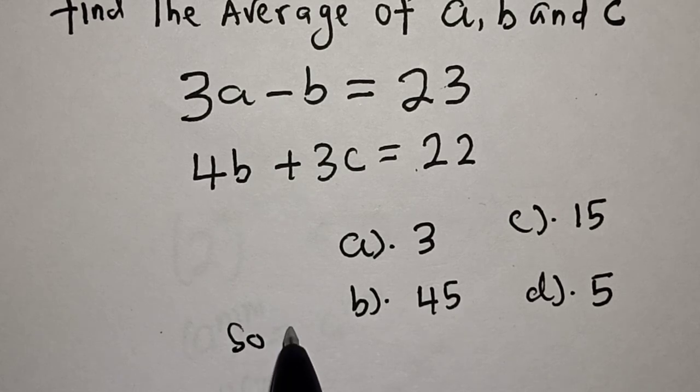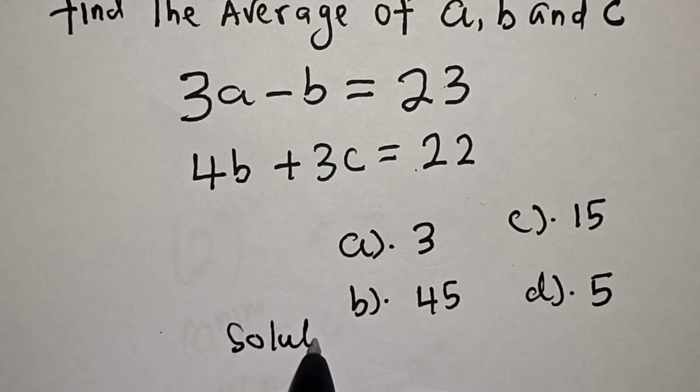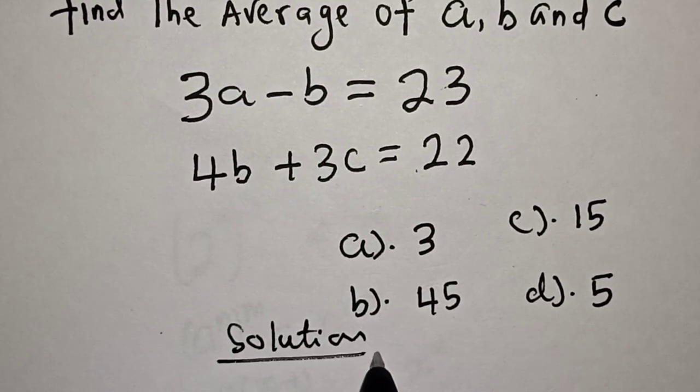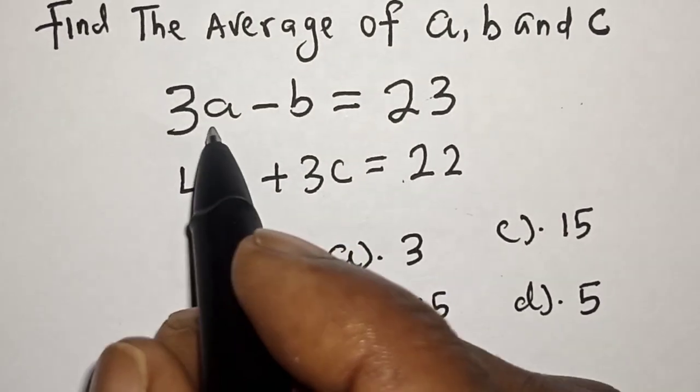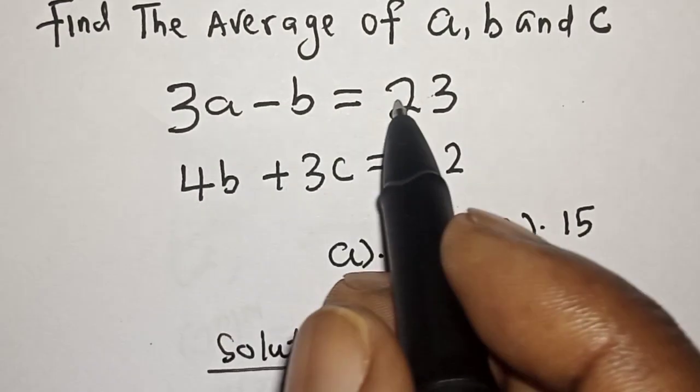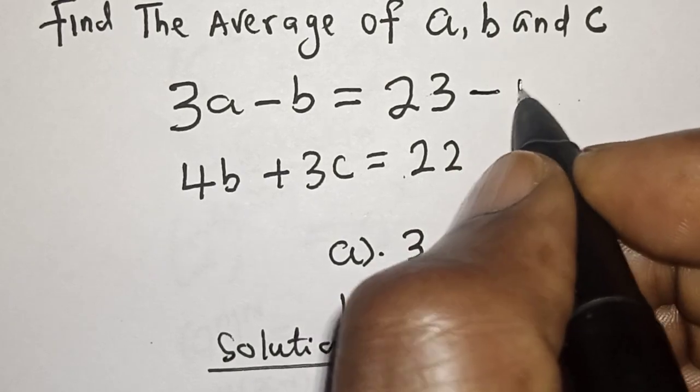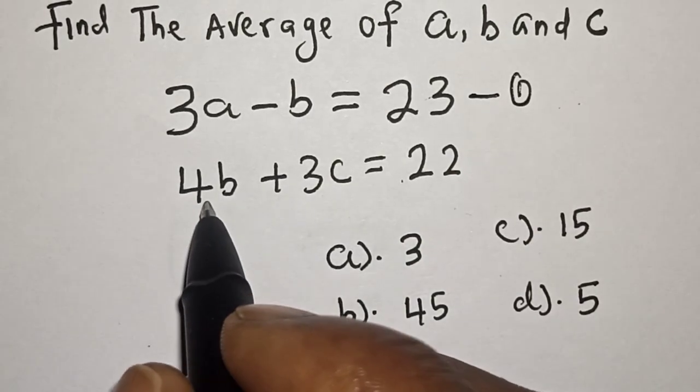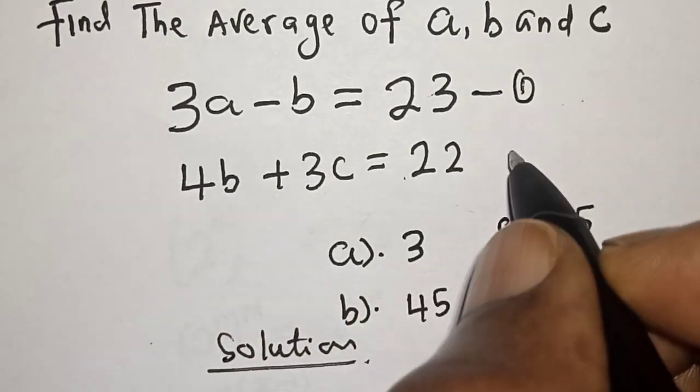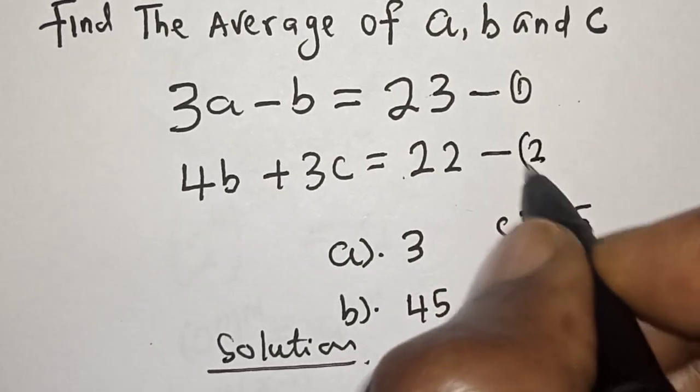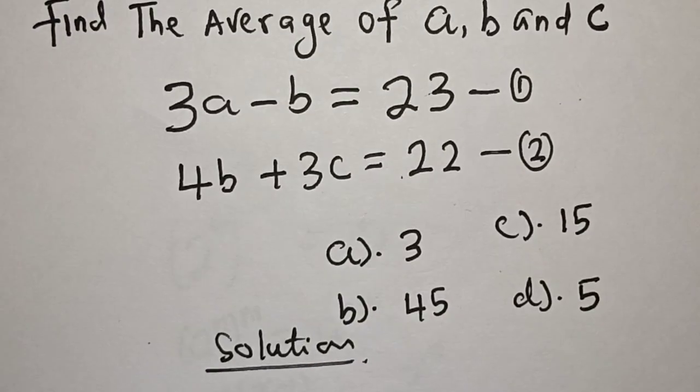Solution. The given equation is 3A minus B is equal to 23, let's call this equation 1, and this is 4B plus 3C is equal to 22, let's call this equation 2. Add equation 1 and 2 together.